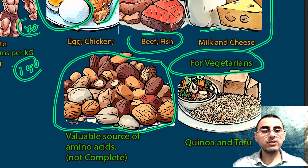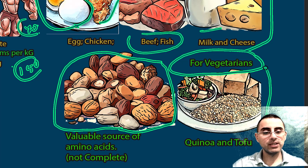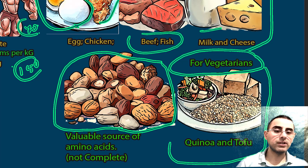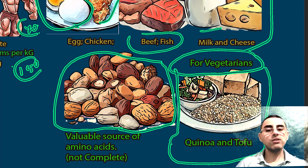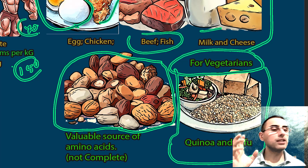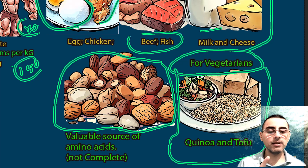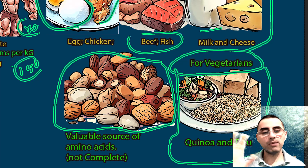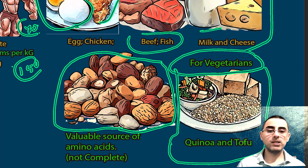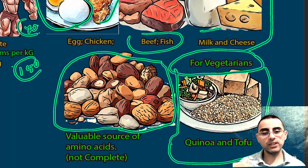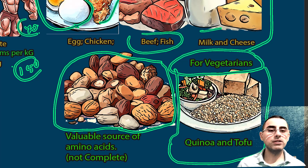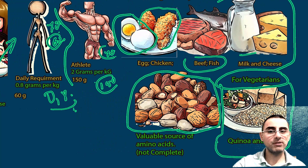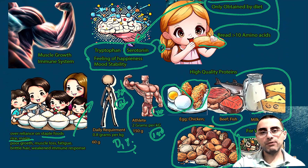What should vegetarians eat to get all essential amino acids? There are two important foods: quinoa and tofu, both of which contain all essential amino acids. So vegetarians can eat tofu and quinoa to meet their essential amino acid needs. It is also important to note that vegetarians commonly have deficiencies in vitamin B12 and B6, so a perfect vegetarian diet should include both quinoa and tofu for amino acids, plus supplementation of vitamin B12 and B6.